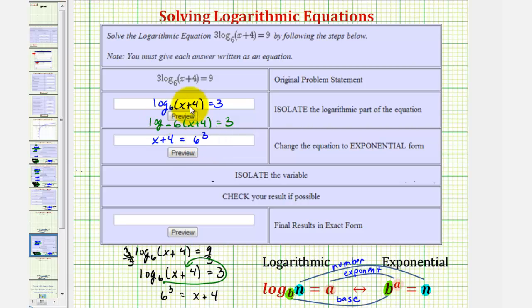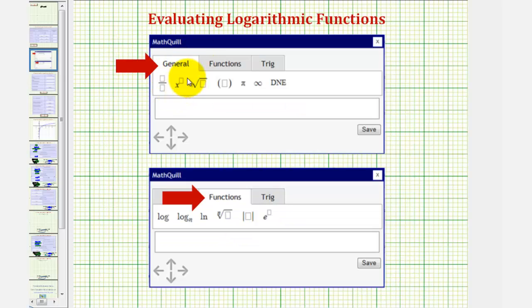And again, there are two ways to enter this exponent here. We could enter x plus four equals six, then Shift six brings up the caret for the exponent, and then three. Or click in the answer cell, click on the small yellow arrow, and under the general tab, use this option here for the exponent.